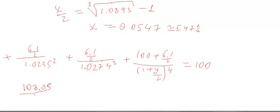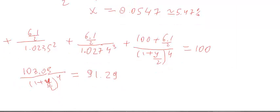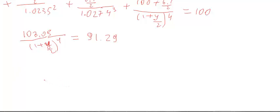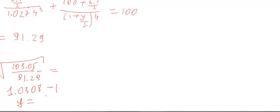Computing the known present value terms, the sum of the first three discounted cash flows is approximately 8.71, leaving 103.05 / (1 + y/2)^4 = 91.29. Solving: (1 + y/2) = (103.05 / 91.29)^(1/4), which gives y/2 ≈ 0.03075, so y equals approximately 6.15%. That is the theoretical 2-year spot rate.